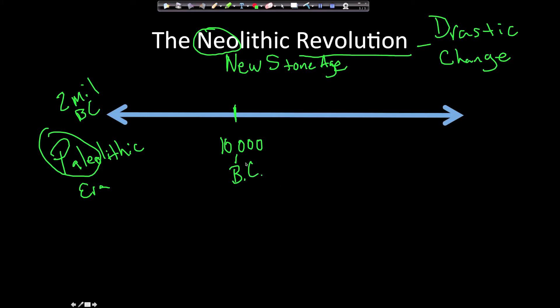Of course, these times aren't exact. It's not like one day the cavemen realized they were in a new age — this is the Neolithic Revolution. This is something historians came up with at a later date, and 10,000 BC is just a nice even number; it happened somewhere around there.